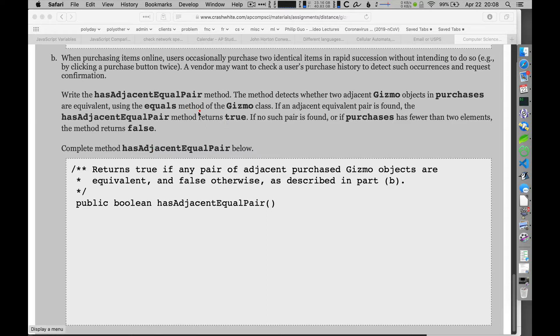I'm not going to prejudge. I'm just gonna look through it and see what happens. So we occasionally have two identical items in rapid succession, and the vendor wants to be able to check to see if there are two gizmo objects that have been purchased at the same time or very close to each other in order.